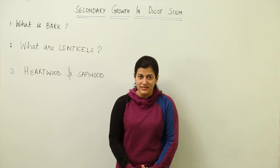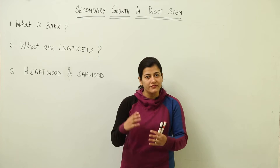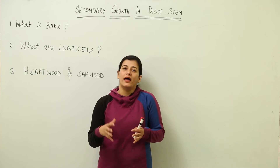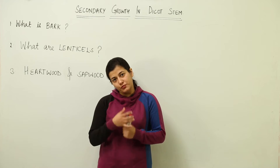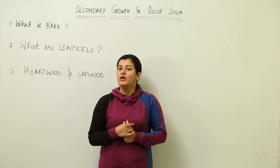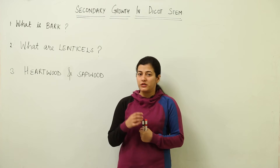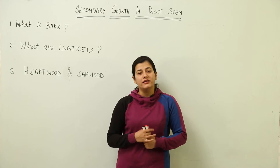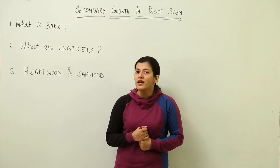Now that we have done the secondary growth in the dicot stem, we have seen the four different steps which were taking place and what was happening at the anatomical level, which brought about that increase in the girth of a stem. We need to know a few more terms associated with that particular aspect of our anatomical study of secondary growth.